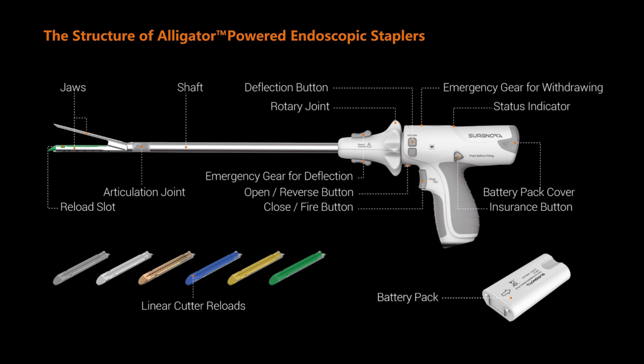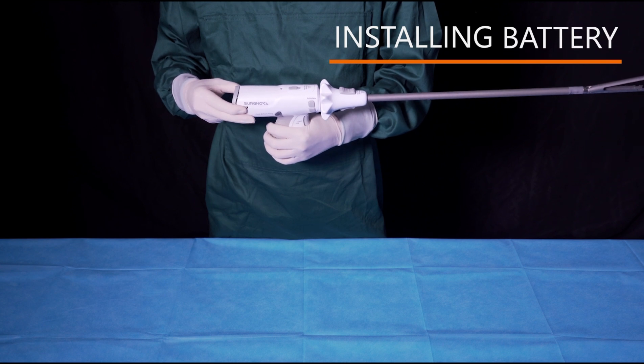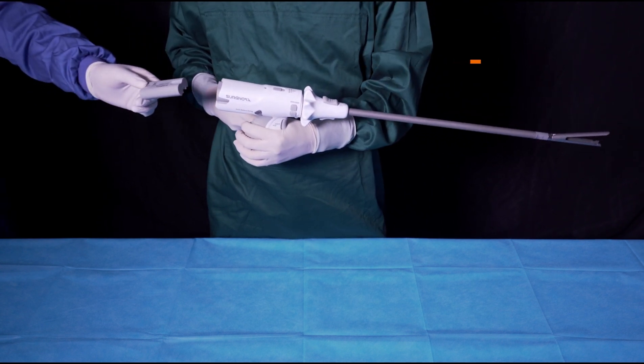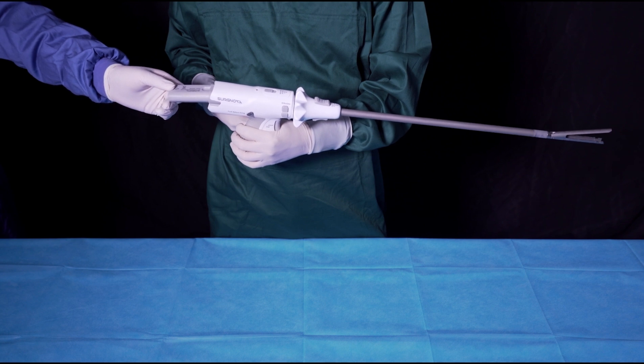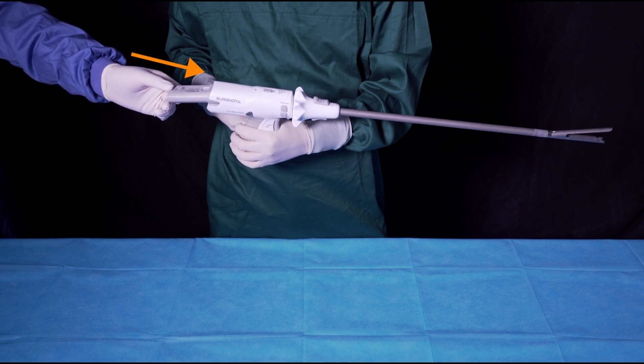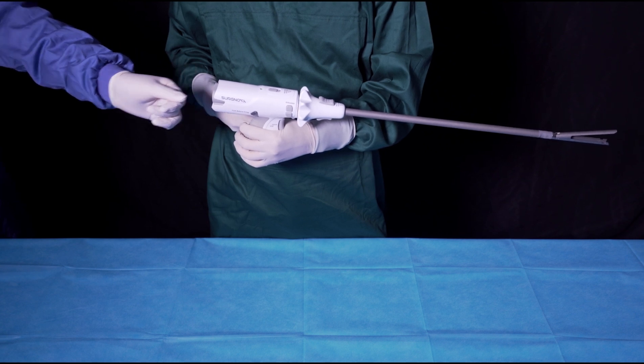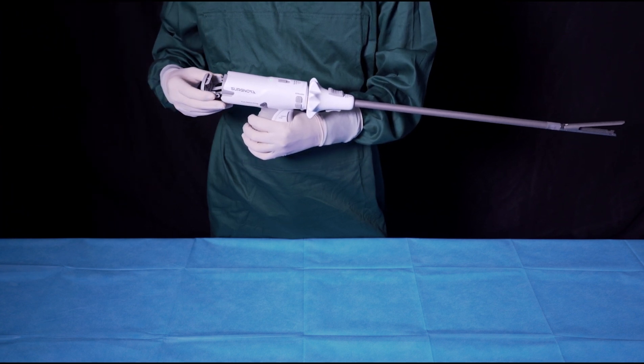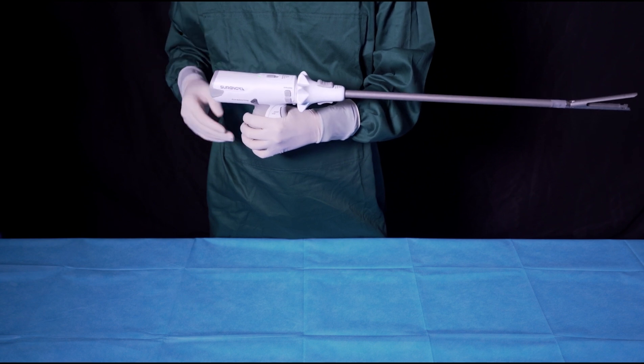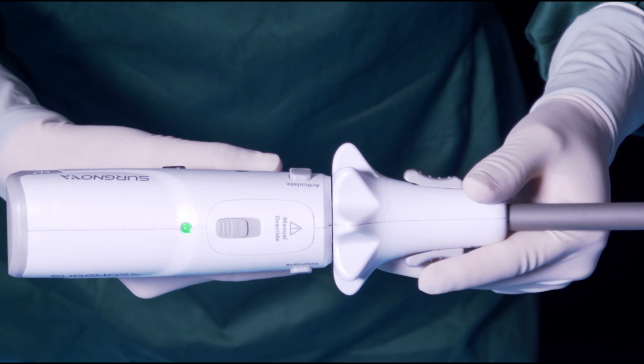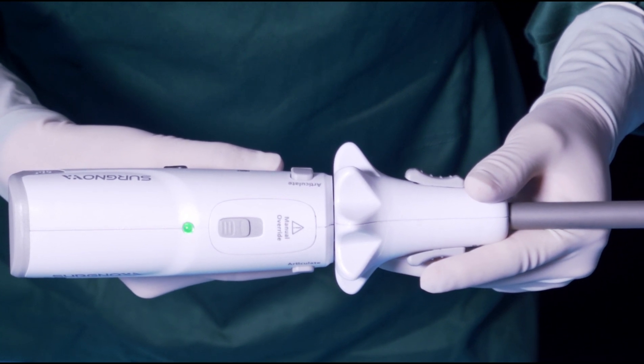Now, let us see how to operate it. Scrubbed nurse opens the battery pack cover. Circulating nurse inserts the battery pack along the direction of the arrow on the battery pack. Be careful not to touch the stapler. Scrubbed nurse puts back the battery pack cover without touching the battery pack. When the battery pack cover is put back in place, the status indicator on the top of the stapler is green.